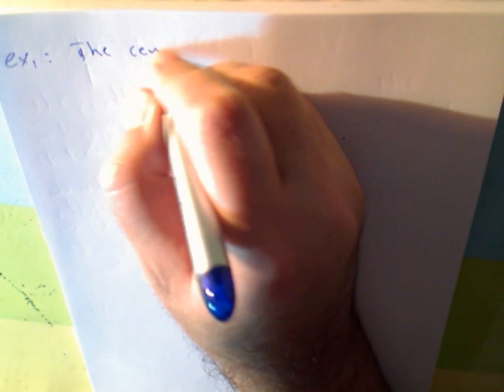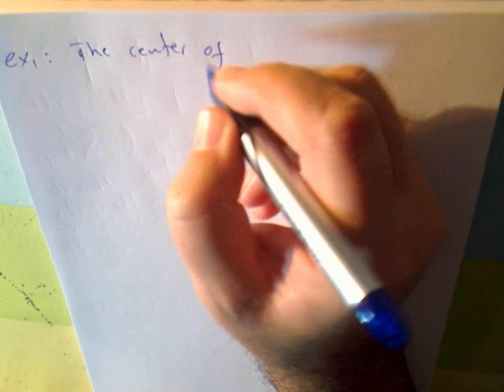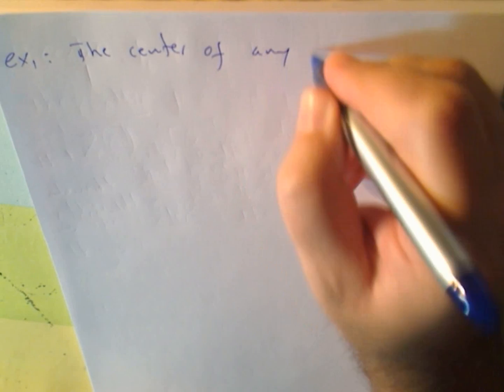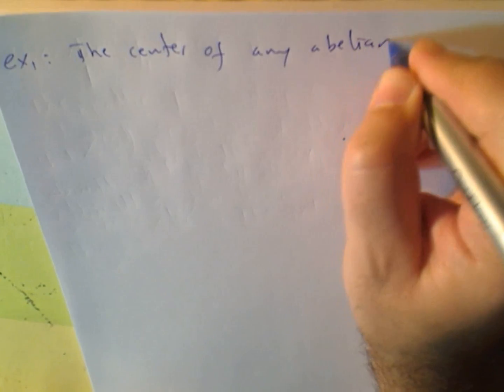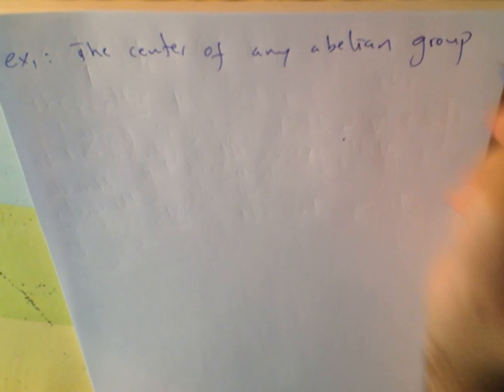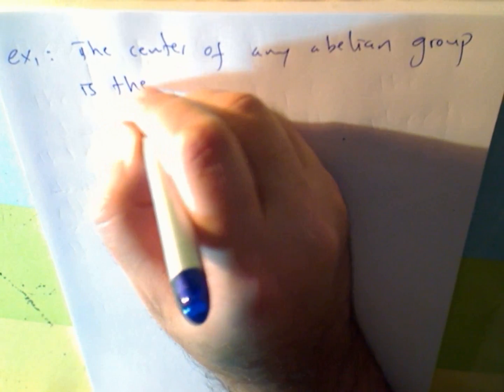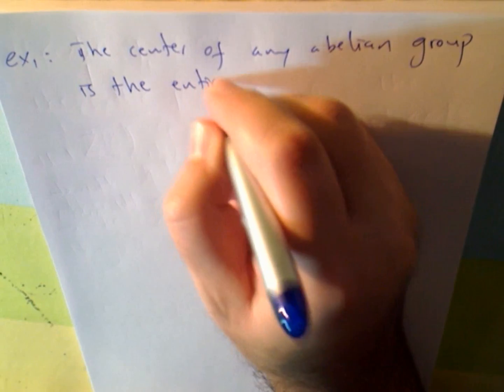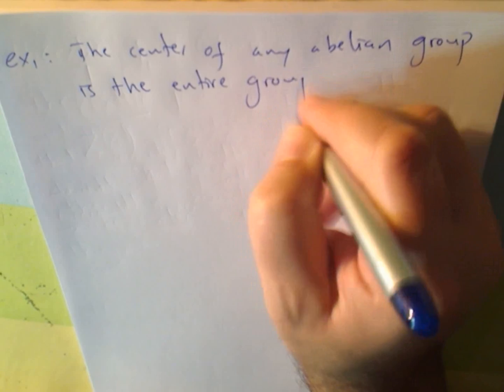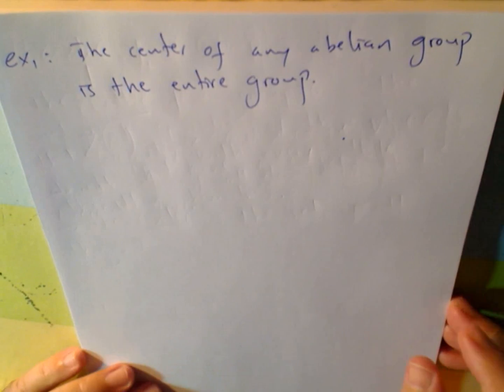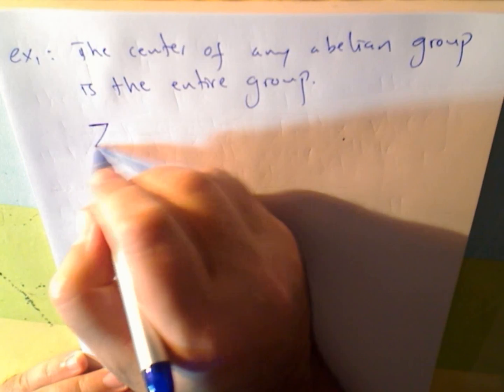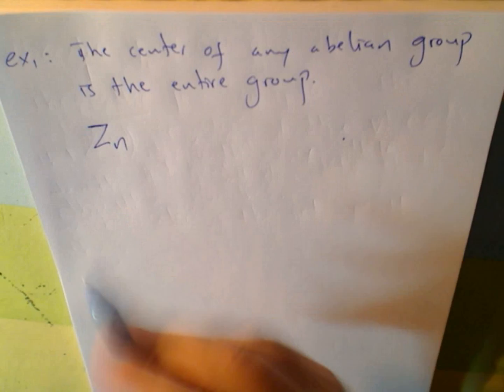I have to say this. The center of any abelian group is the entire group. So, don't count on groups like Z, N.